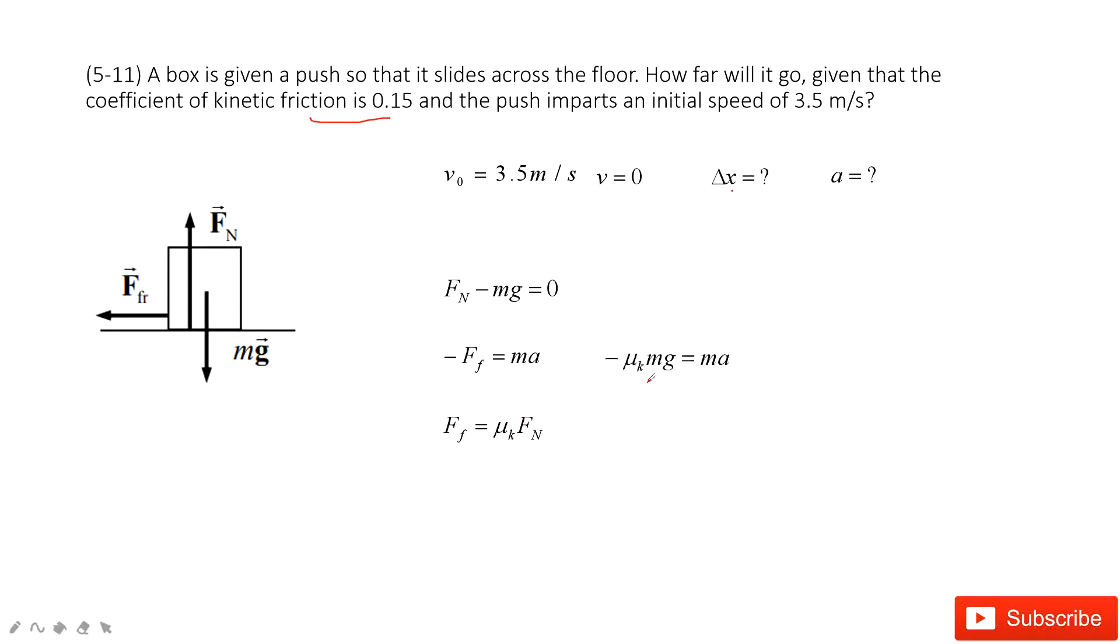When we solve these three equations, we can get the acceleration equal to negative mu_k times g. You can see you know mu and you know g, so it's easy for you to get the acceleration.